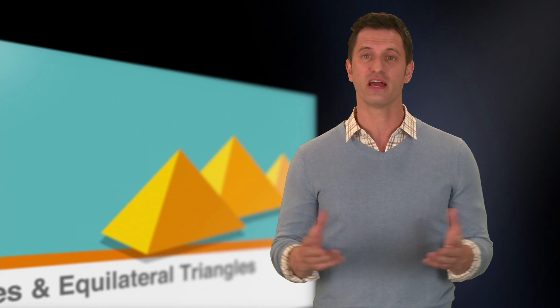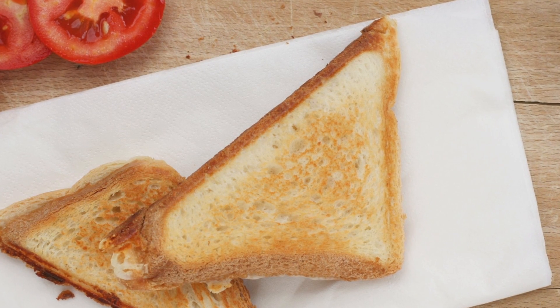For now, we're mostly going to focus on isosceles triangles, which can be found in everyday life, just like these halves of this tasty sandwich. Isosceles triangles have two sides that have the same length, and the angles opposite those sides are also equal.